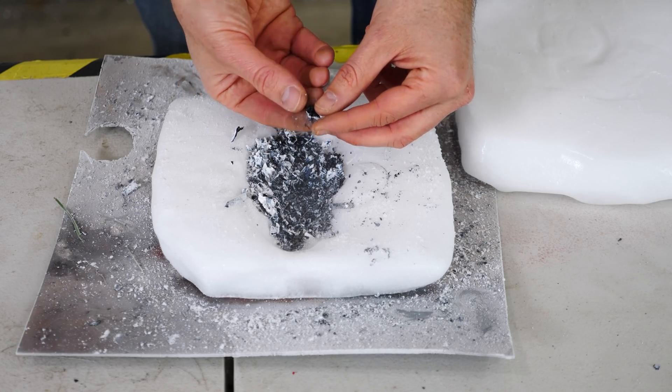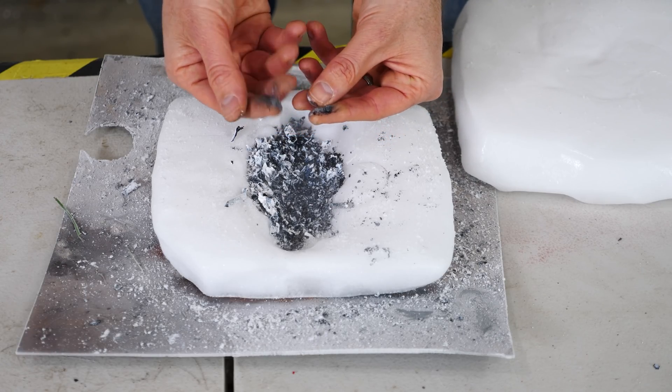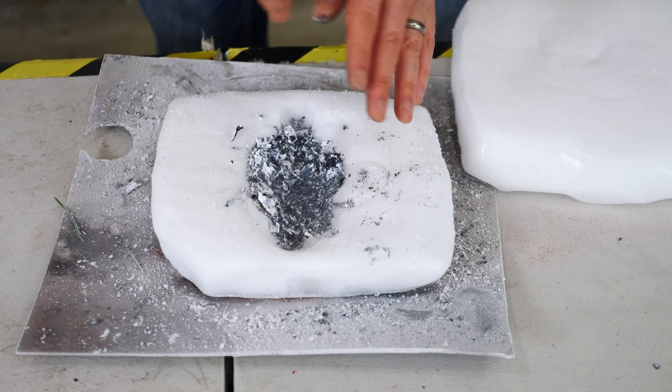So you can see I end up with this black carbon here and then the white stuff is the magnesium oxide.